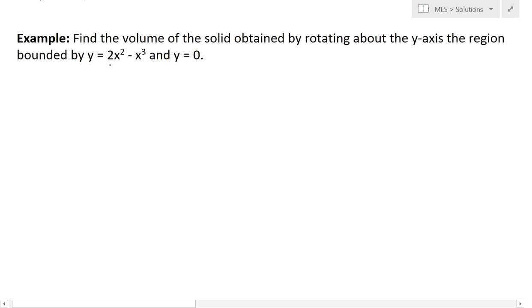Basically I'm going to cover this example which states find the volume of the solid obtained by rotating about the y-axis, which is the region bounded by y equals 2x squared minus x cubed and y equals 0. So a region bounded by these two curves.